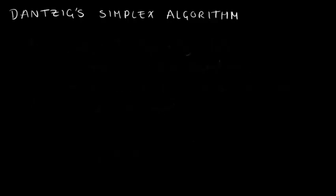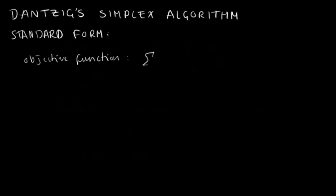But in order to do the simplex algorithm, we need our linear programs to be in what's called standard form. So the standard form of linear programs is to have an objective function that looks like this, and a set of inequalities that look like this.